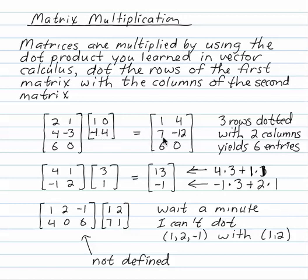For example, the entry in the answer, second row, second column, minus 12, is just the second row of the first matrix times the second column of the second matrix. 4 times 0 plus negative 3 times 4. That's how I got the minus 12. Same for all the other entries.